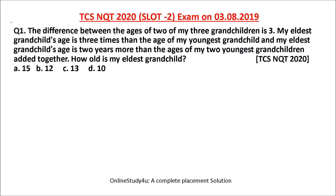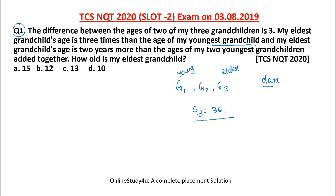Let us start with question number 1. The difference between the ages of 2 of my 3 grandchildren is 3. There are 3 grandchildren: G1, G2, and G3. My eldest grandchild's age is 3 times the age of my youngest grandchild. For solving any aptitude question, first write down the data given in the question.